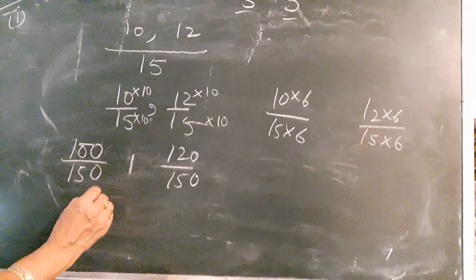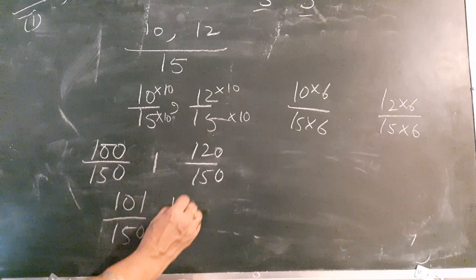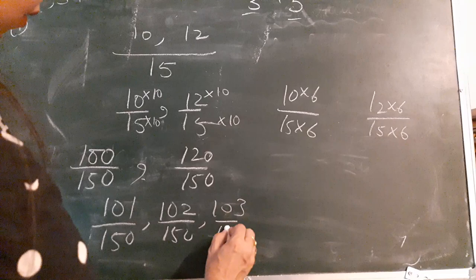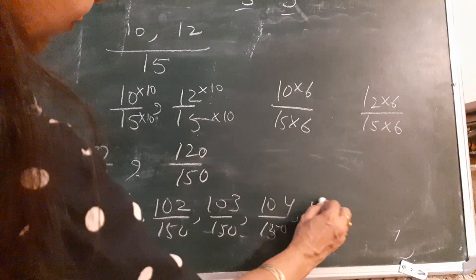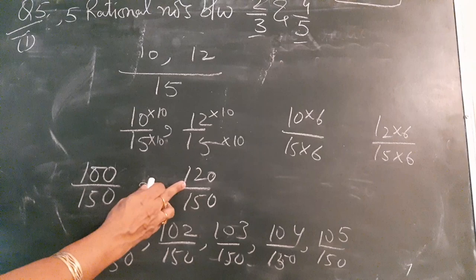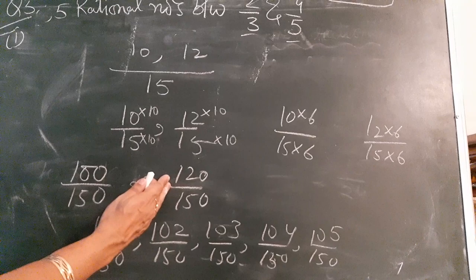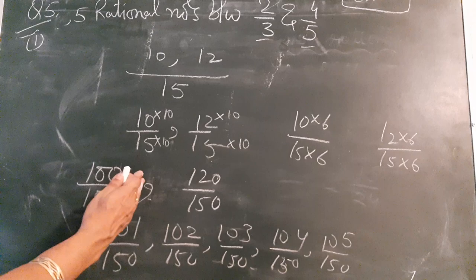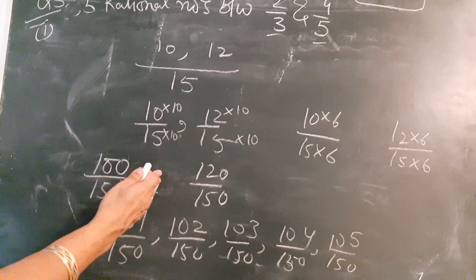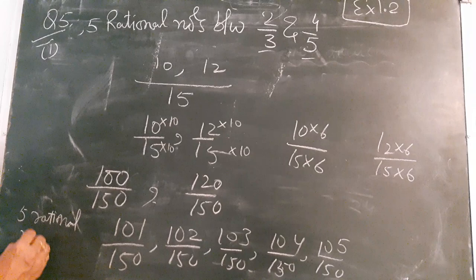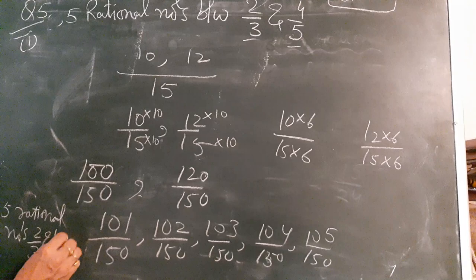The rational numbers between 100/150 and 120/150 include 101/150, 102/150, 103/150, 104/150, 105/150, and so on up to 119/150. You can also write numbers from the other end: 119/150, 118/150, 117/150, 116/150. Write down any five rational numbers between 2/3 and 4/5.